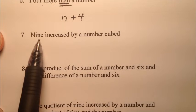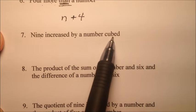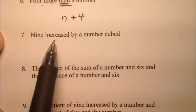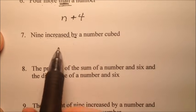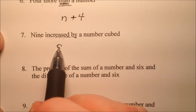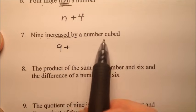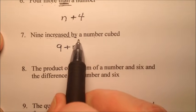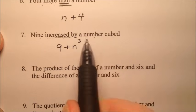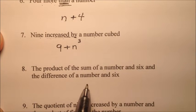Number seven says nine increased by a number cubed. Increased by means we're going to add to it. So it's going to be nine, and we're adding a number cubed. A number cubed is n to the power of three, giving us nine plus n cubed.